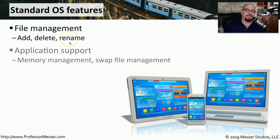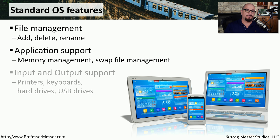An operating system is also going to provide a way to run applications. This means not only is it going to display that application on the screen, there's going to be a lot of interaction between that application and the memory that you're using. There may also be files that are spooled out to disk using swap file management and then swapped back in as you're using other parts of that application.